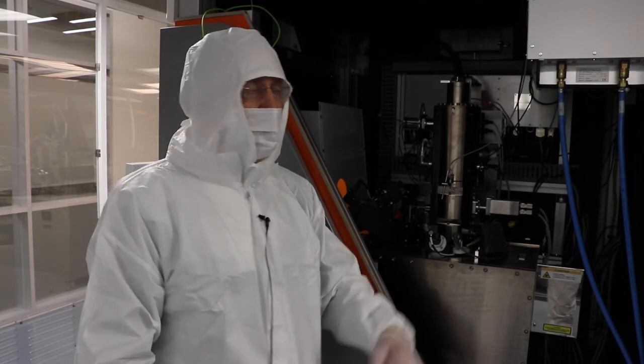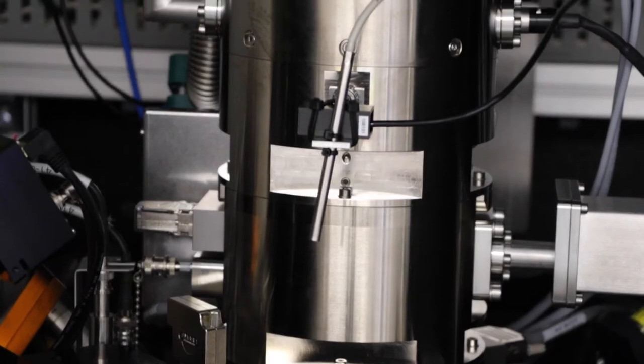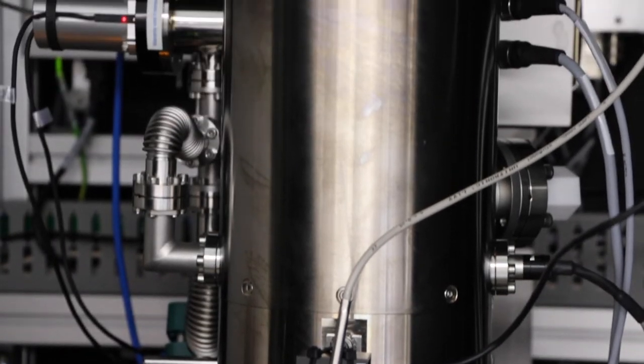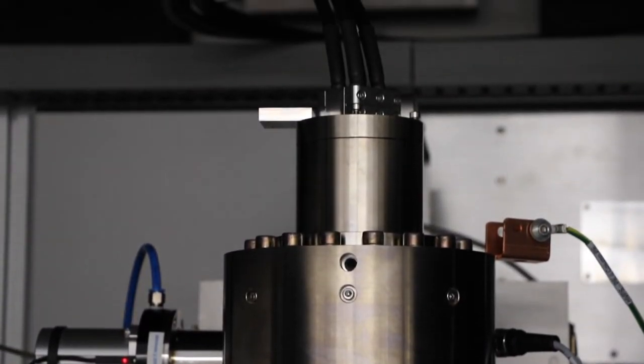On top of the e-beam lithography system is the electron source, which produces the electron beam.